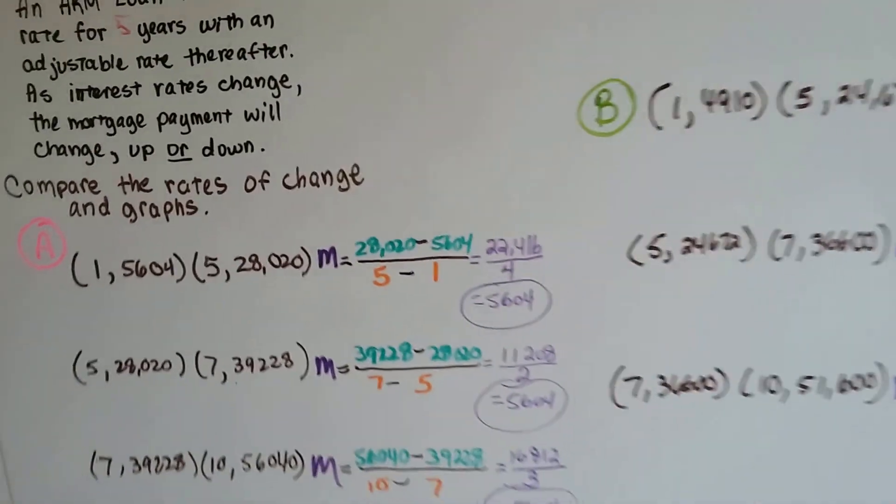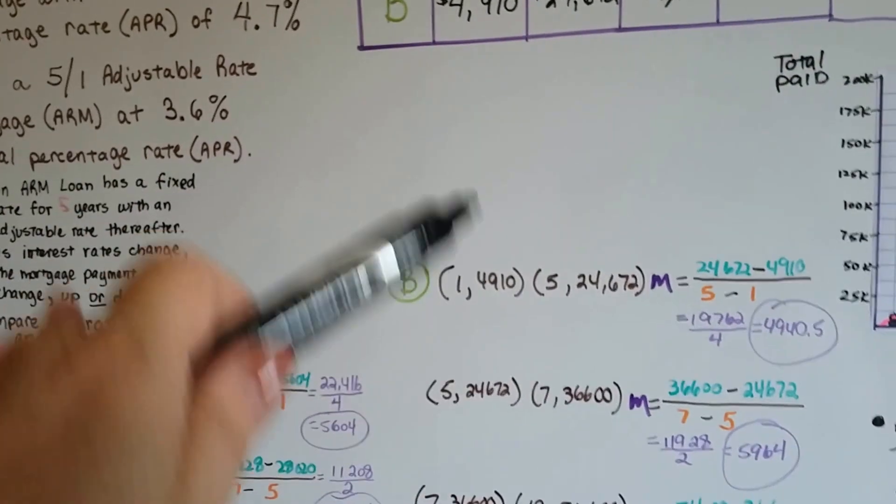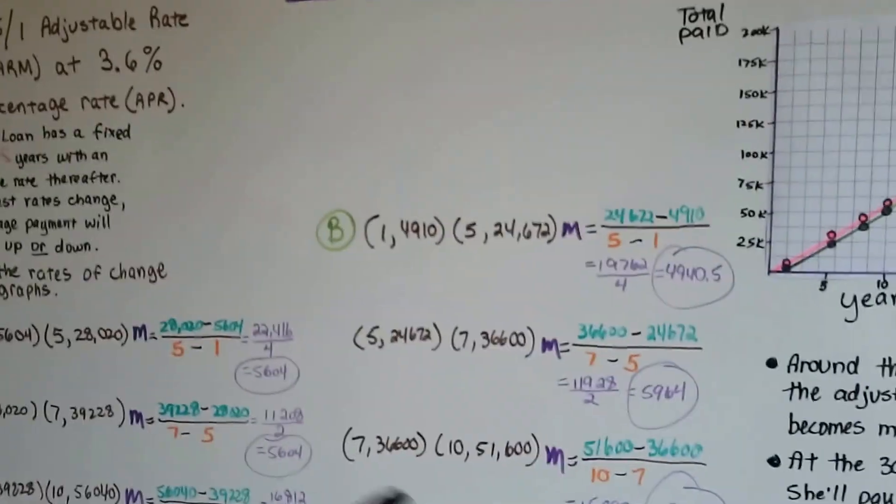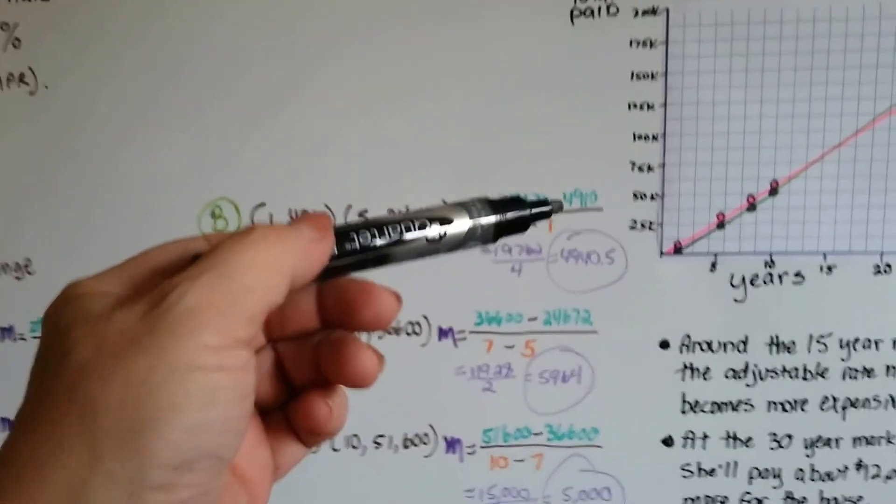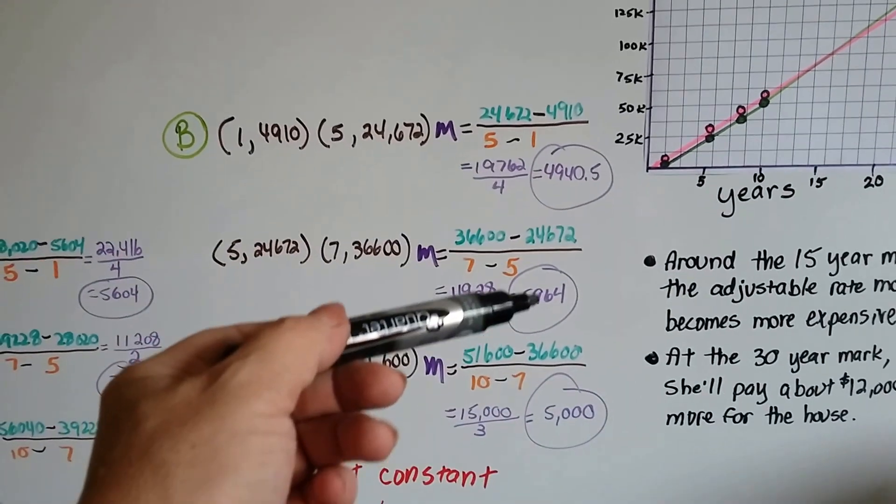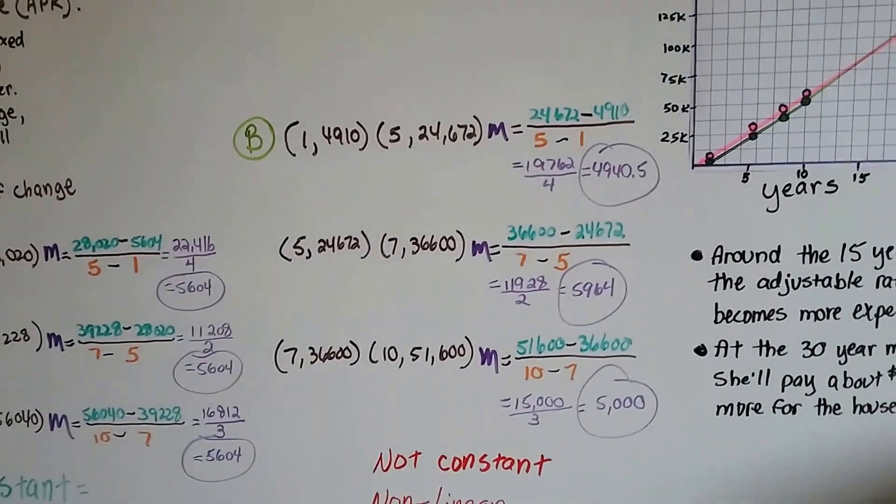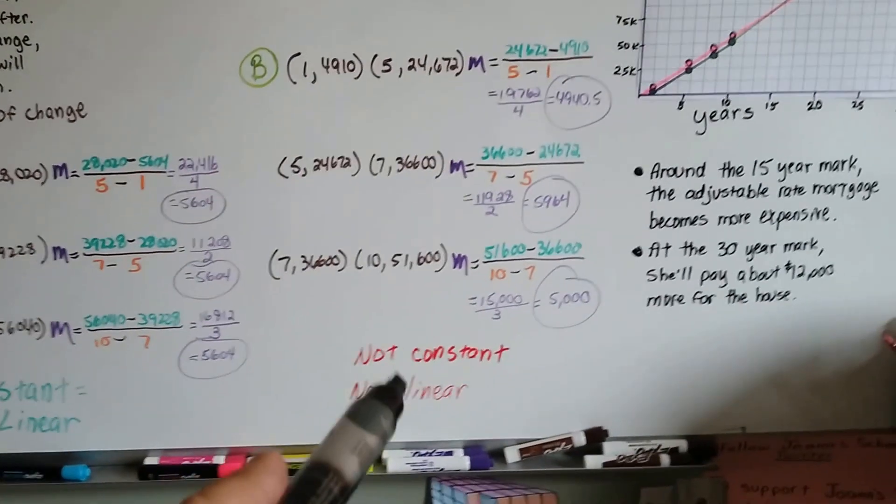But in the adjustable rate mortgage, now we knew it was adjustable, and that means moving, right? Like you adjust a seat or you adjust something, all the slopes are different. It went from 4,900 something to 5,900 something to 5,000. It was all over the place, and it kept changing.